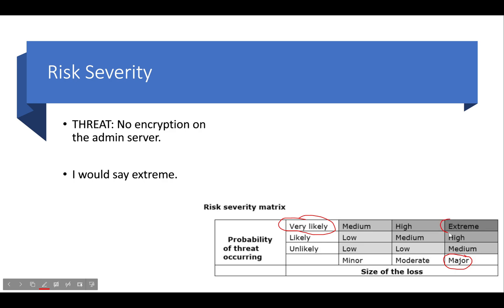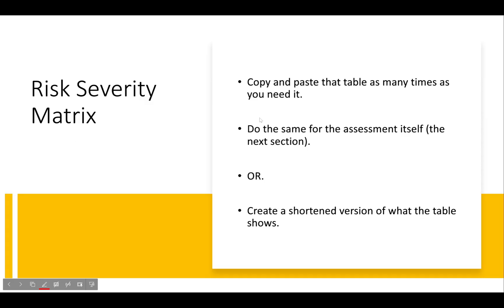In this case, because getting access to the server data would be detrimental — not just to the school but to individuals, since the data includes addresses, names, dates of birth, possibly copies of passports, and bank details — someone could commit fraud. So the probability is very likely, size of loss is major, and risk severity is extreme. This is how you use this table. I'll do another example when I get to the Word document section.